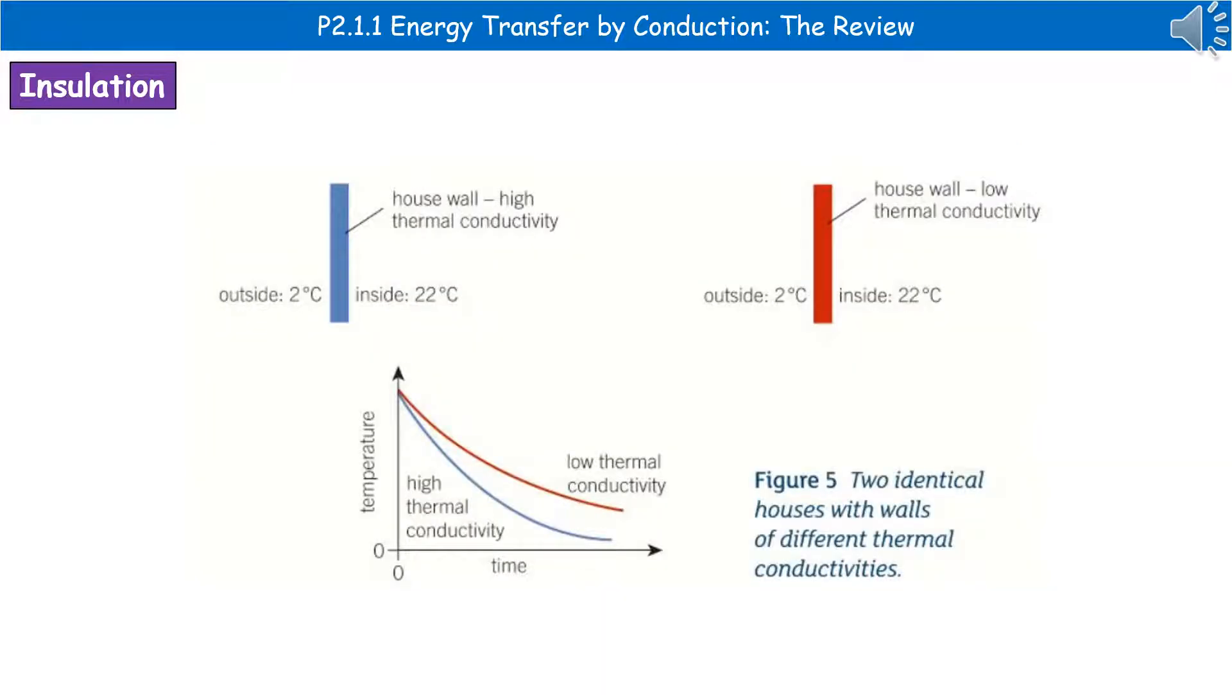If we consider what this looks like in a graph, I've given you two different walls of our house. On the left, the blue wall has a high thermal conductivity, and the red wall on the right has a low thermal conductivity. Everything else is the same—same thickness and same temperature difference between inside and outside. Looking at the graph underneath, you can see that the red line decreases more steadily while the blue line has a rapid decrease. The red line represents low thermal conductivity, where it takes longer for energy from inside to transfer outside, compared to the blue line with high thermal conductivity, where it happens much faster.